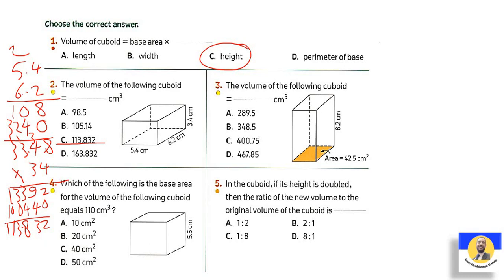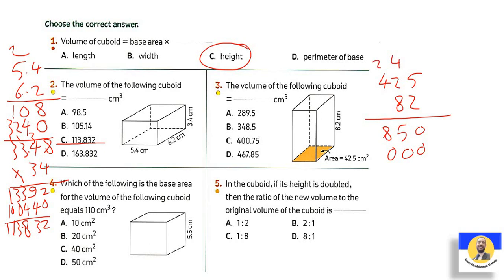Next question: volume of cuboid = base area times height. Multiply 2×5=10 carry 1; 2×2=4+1=5; 2×4=8. Put 0. 8×5=40 carry 4; 8×2=16+4=20 carry 2; 8×4=32+2=34. Make addition: 0, 5, 8, 3, 4. Place decimal point after 2 digits: 348.50. This zero we can cancel, so the answer is 348.5.